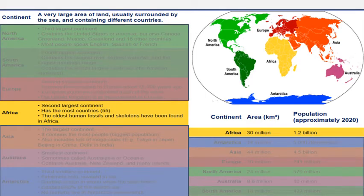So what have we been learning this term? This is our knowledge organizer which is at the front of your book. You can see that we have already learned about Europe, we learned about Australia, and today we're going to learn all about Africa.